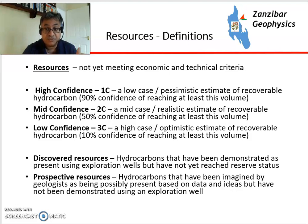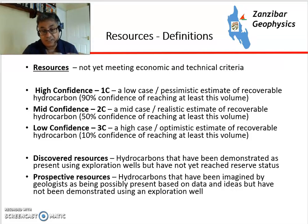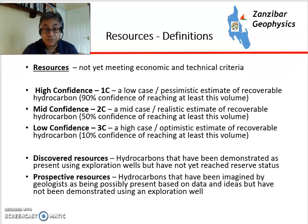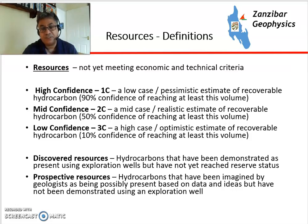1C is high confidence — this is the pessimistic case, pretty certain that we've got it. 2C is mid confidence, a 50-50 chance of having at least that much. And 3C is what happens if things go really right for us — only a 10% chance of reaching it, but it might be possible. So typically you would have resources within those three particular categories.